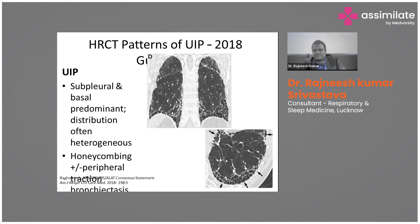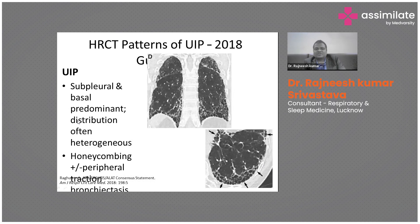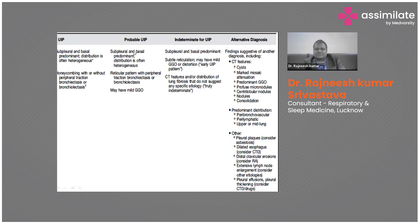We can see honeycombing that is subpleural and basal, with or without tractional bronchiectasis. This pattern is known as UIP pattern. We can see stacked cysts at the base of the lung in two or three layers, with septal thickening and tractional bronchiectasis. In multiple images, we see honeycombing in a subpleural basal location with or without tractional bronchiectasis and septal thickening.